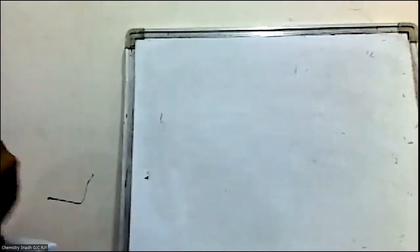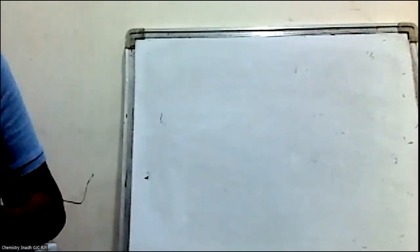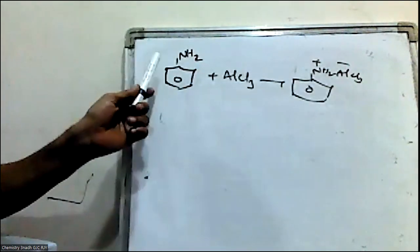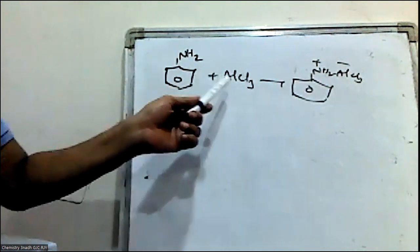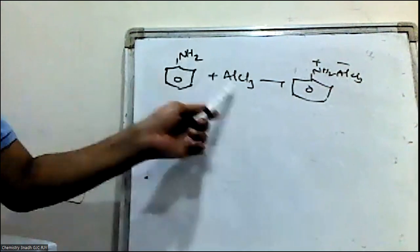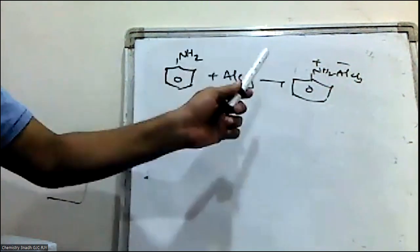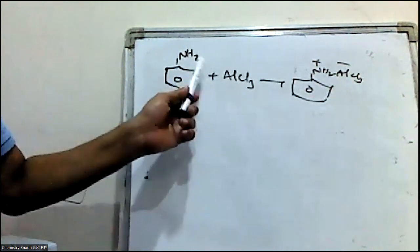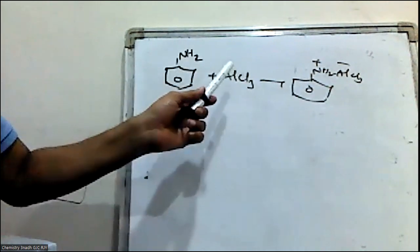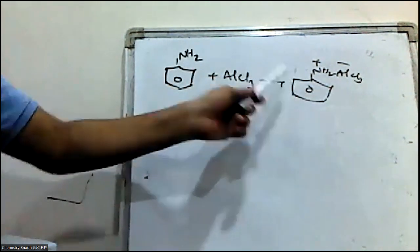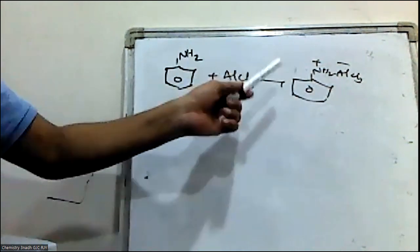The reason why aniline or substituted anilines do not undergo Friedel-Crafts alkylation or acylation is due to salt formation. When aniline reacts with an alkyl halide in the presence of a Lewis acid, aniline reacts with the Lewis acid and forms a salt.